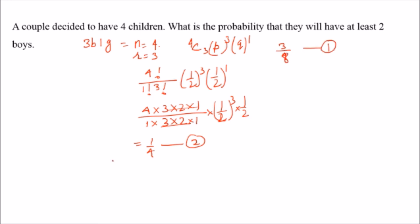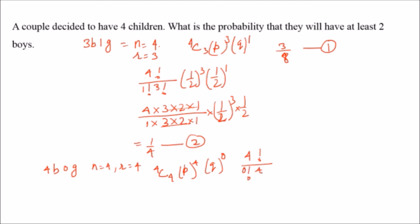The third condition is when all 4 are boys and 0 are girls, so n = 4 and r = 4. The formula gives C(4,4) × (1/2)⁴ × (1/2)⁰. Since 0! = 1 and (1/2)⁰ = 1, this simplifies to 1 × (1/2)⁴ = 1/16. So the third condition gives 1/16.